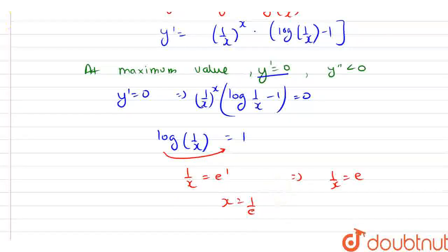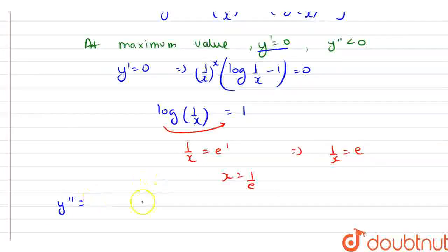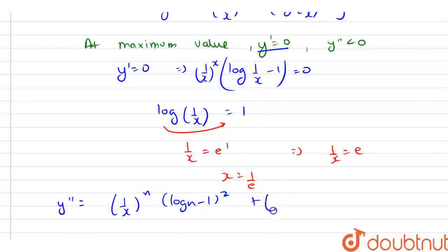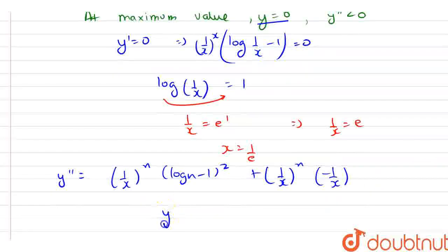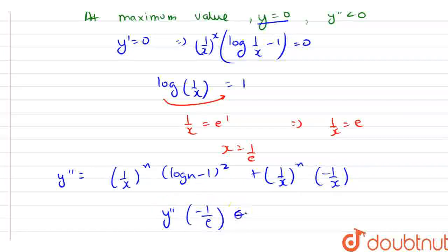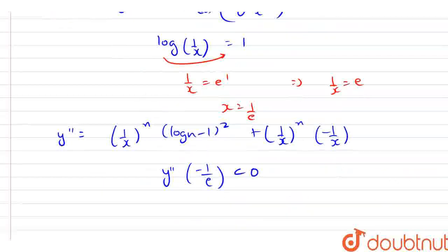Now, let's find the value of y''. It will be equal to (1/x)^x · (log(1/x) − 1)² + (1/x)^x · (−1/x). Putting x = 1/e, y'' involves a factor of −1/e, which is negative. So y'' < 0, confirming a maximum at x = 1/e.